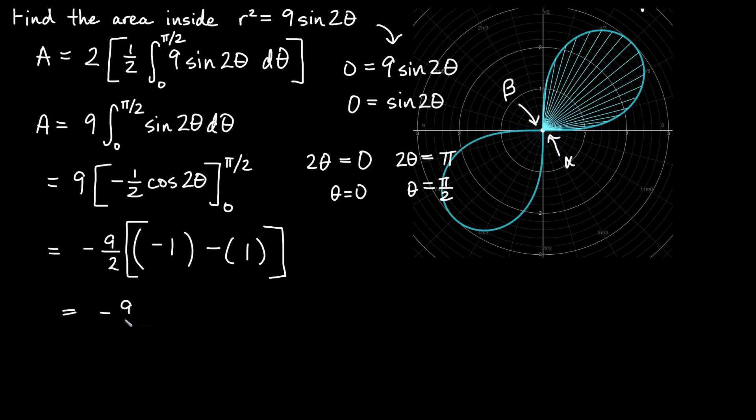We get -9/2 times (-1 - 1), which is -9/2 times (-2). The negatives make this positive, the 2 and the ½ reduce, and so we simply get an area of 9.